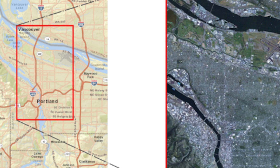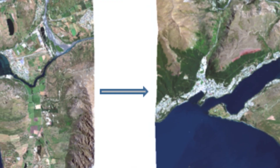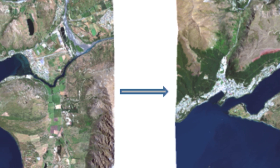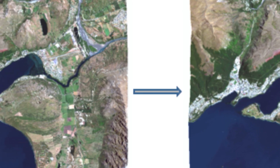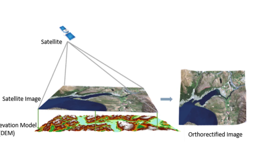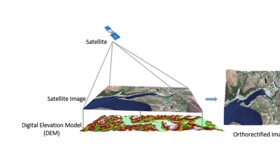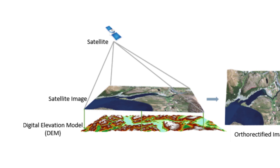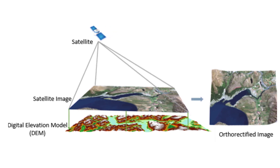Although both georeferencing and orthorectification are necessary to correct geometric distortions in an image, this course uses orthorectification to create the final product. In the resulting image, every pixel is depicted as if viewed at nadir, or directly overhead, with all the effects of hills, valleys, and so on removed.